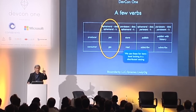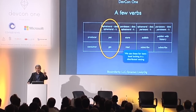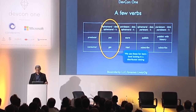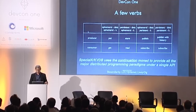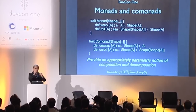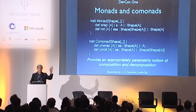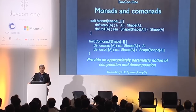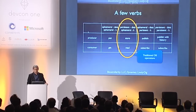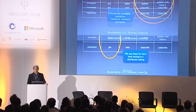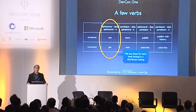If the published data is ephemeral but the continuation persists, that's ordinary publish and subscribe. If both of them persist, it's publish and subscribe with a history — a link to the backlog of what you published. And finally, if they both disappear, you get item-level locking in a distributed transactional semantics. So one API — the monadic API — covers all of those distributed programming paradigms.